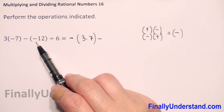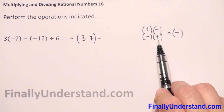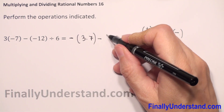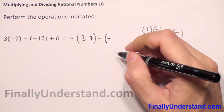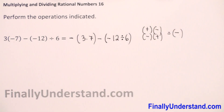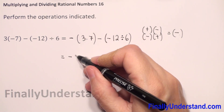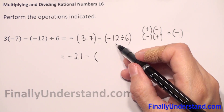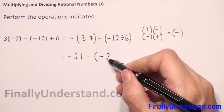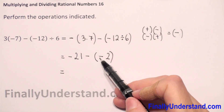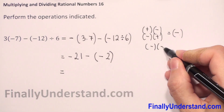Now we have division: a negative number divided by a positive. As I said, negative divided by positive — the answer is negative. So in parentheses we write a negative sign, and we divide 12 by 6. This equals negative 21 minus negative 2, since 12 divided by 6 is 2.